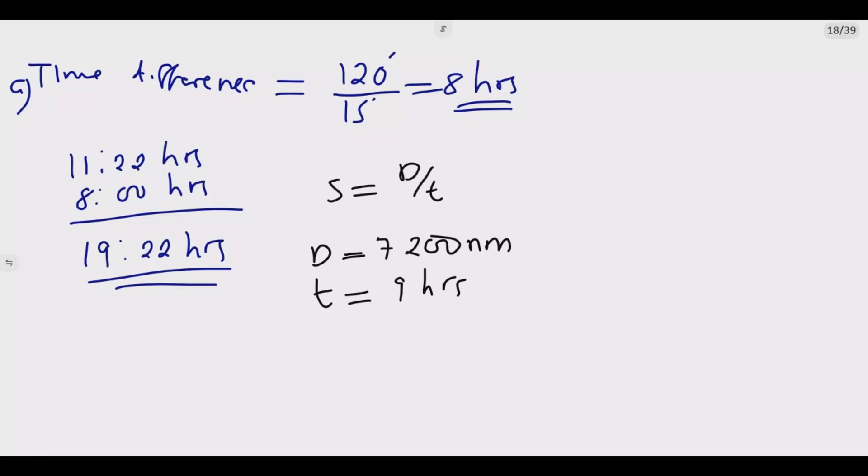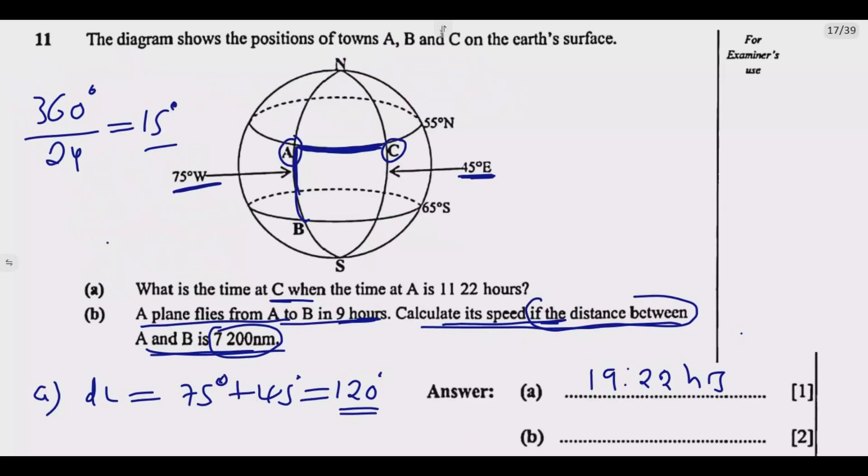So to find speed, what do we do? We just come here and do: it will be 7200, not commas, divide by 9 hours. This is going to give me 800 knots, which is nautical miles per hour. So it's 800 knots. So make sure to write properly the units. Once you do that, you are good to go. You get the 2 marks. So this is how you answer this question to get the 3 marks.